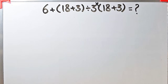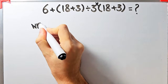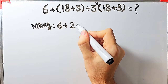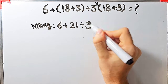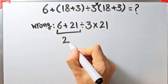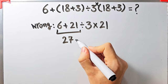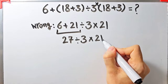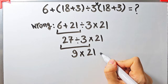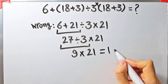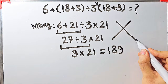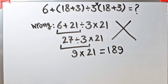In this question we have addition, parentheses, multiplication, and division. Some people solve this question by starting from the left: they say 6 plus 18 plus 3 equals 21, then divided by 3, then times 18 plus 3 equals 21. So 6 plus 21 equals 27, then 27 divided by 3 equals 9, and 9 times 21 equals 189. They say the final answer equals 189, but this answer is definitely wrong.